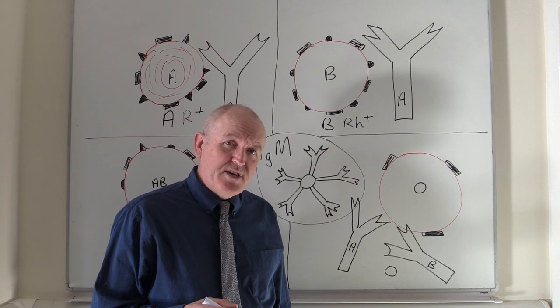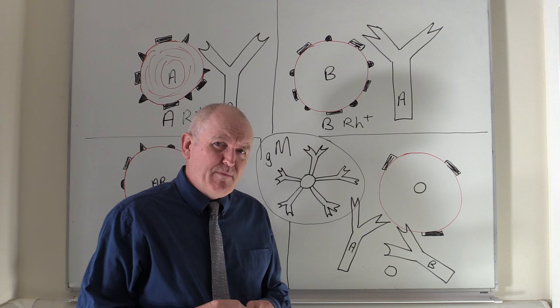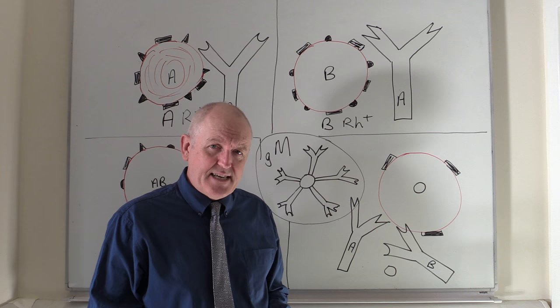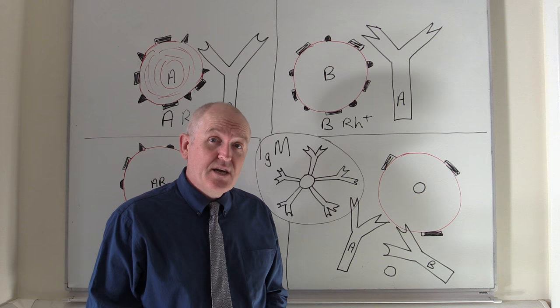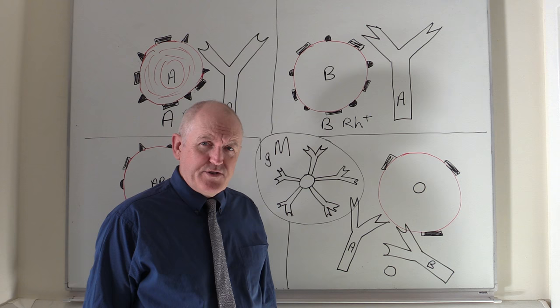Blood groups are actually quite a bit more complicated than this. The last time I read about it, there were 35 different types of blood groups that have been identified. But the ABO and rhesus groups are the immunologically most significant ones to take into account for blood transfusion. Most transfusion laboratories will also take into account more factors beyond just ABO and rhesus.